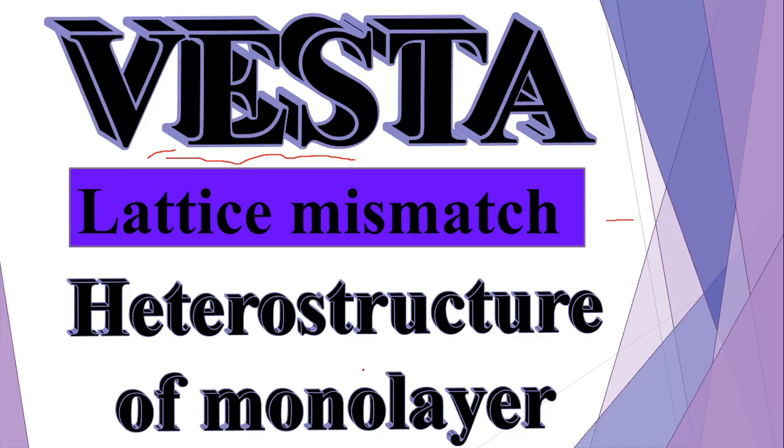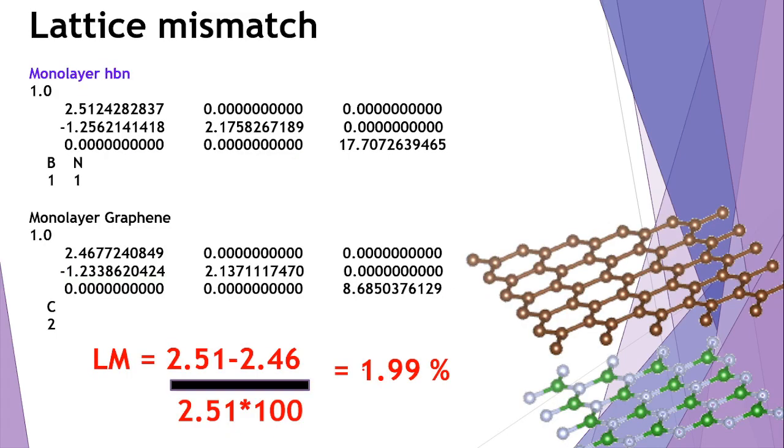What is lattice mismatch? Whenever you're trying to create a heterostructure between two different systems, their lattice constants will not always be the same. In this case, suppose we are taking hBN with this lattice constant, and graphene has this lattice constant. Now suppose we have created a heterostructure between these two systems.